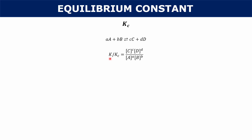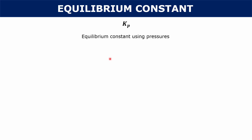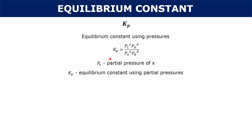Kp is the equilibrium constant using pressures. If you had a reaction with just gases, you could write your equilibrium constant using partial pressures — the partial pressure of C to the c, partial pressure of D to the d, over partial pressure of A to the a and partial pressure of B to the b. You can only do this when all your reactants and products are gases. If you calculated Kp and Kc for the same reaction, they're not necessarily the same — one uses partial pressure and one uses concentrations.